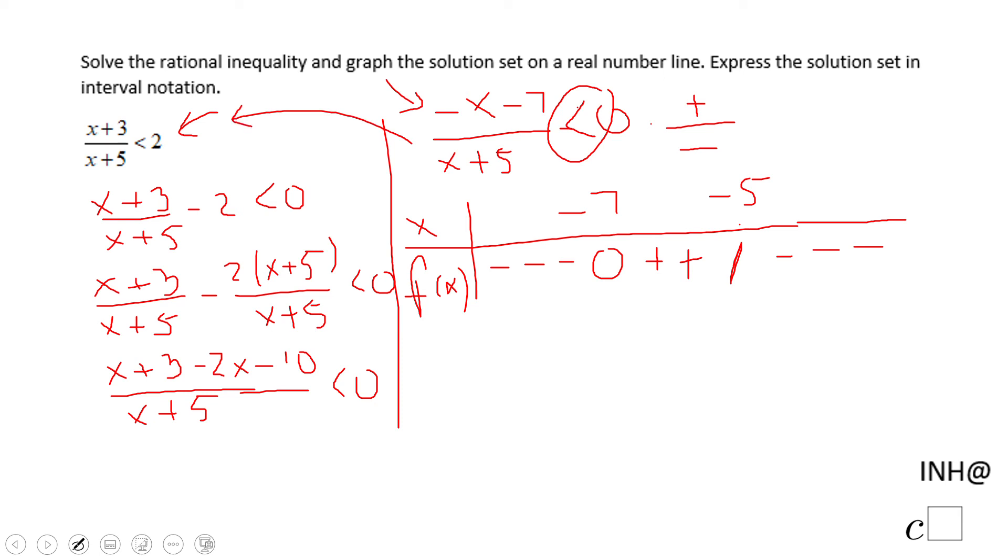Now looking at this inequality, which is equivalent to this one, the solution set is negative infinity to negative seven, and it's just less than so we need a parenthesis, union with negative five and infinity.